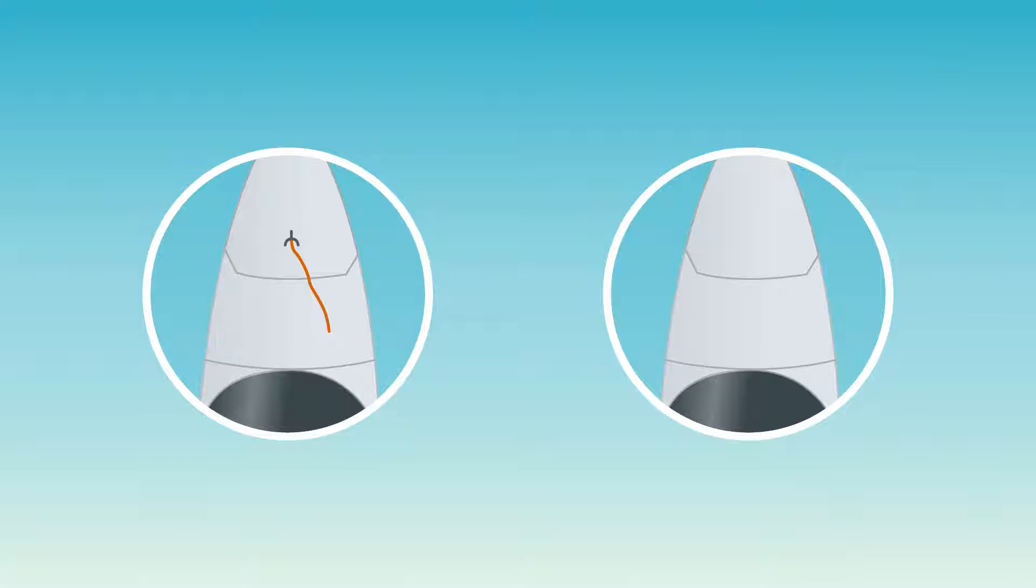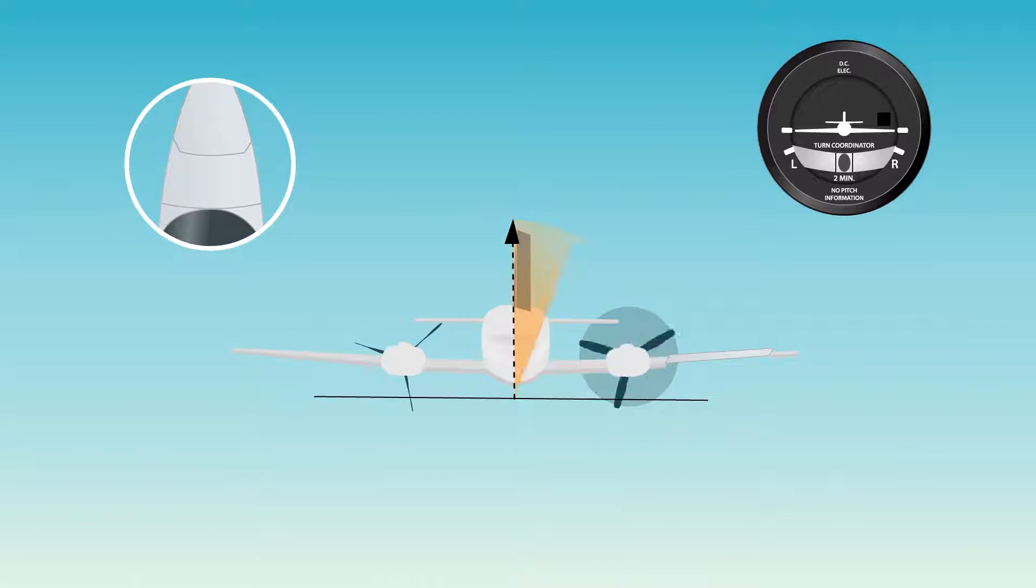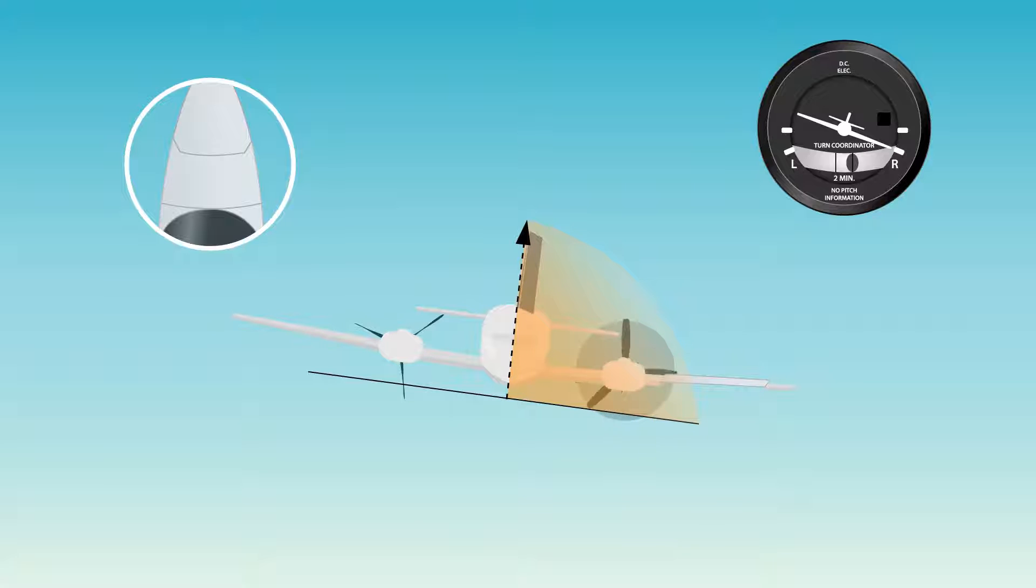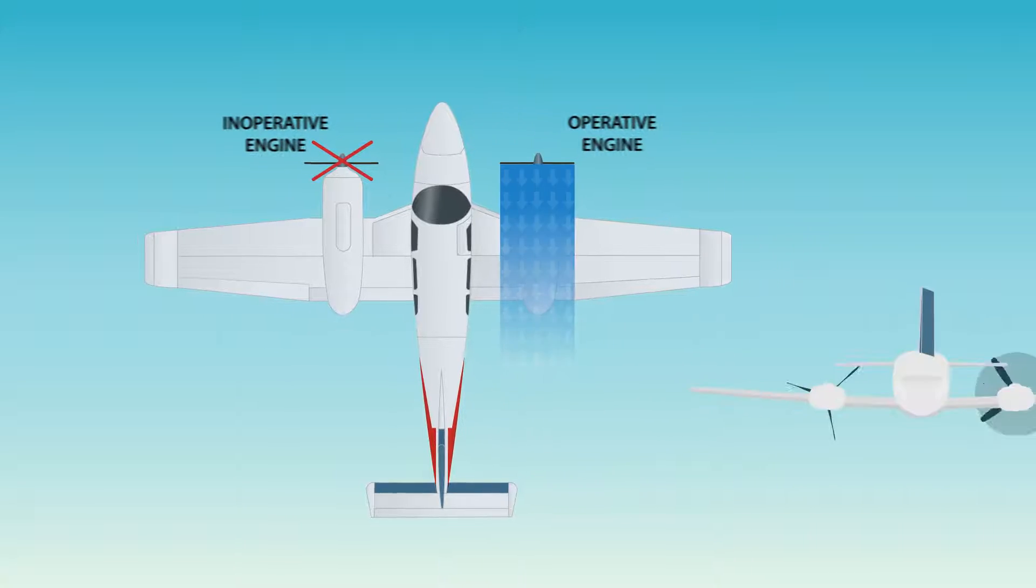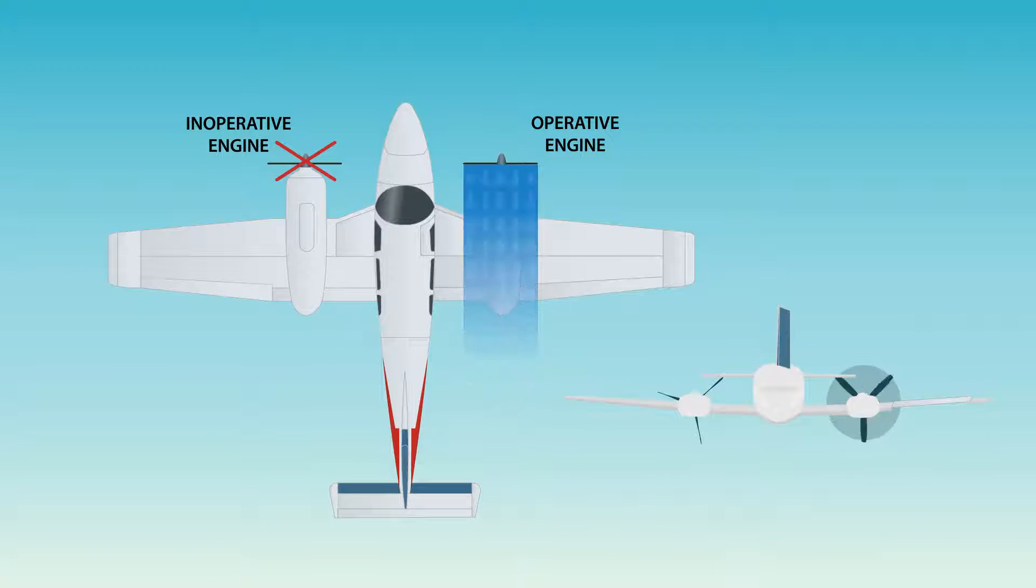When we don't have a yaw string, there is a predetermined condition to establish zero sideslip using a bank angle and ball position. Since the AFM POH performance charts for one engine inoperative flight were determined at zero sideslip, this technique should be used to obtain the charted OEI performance.